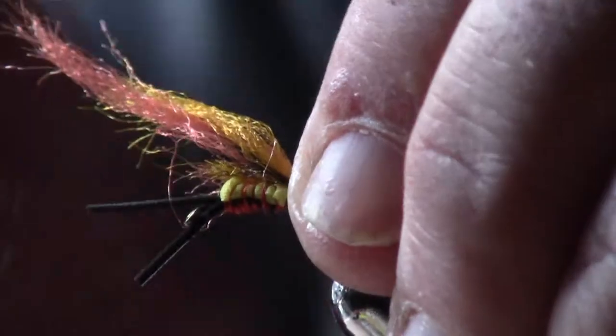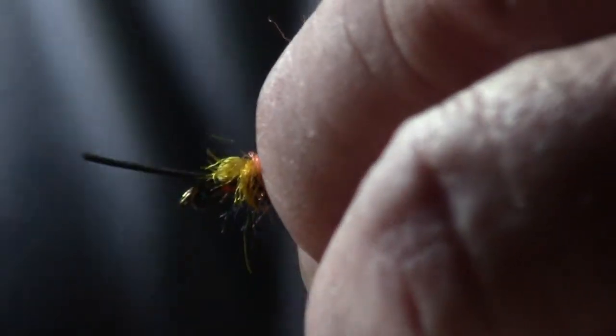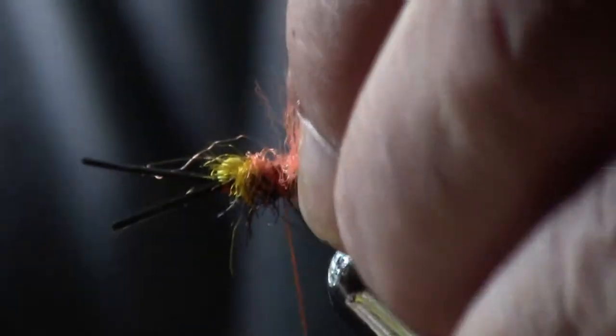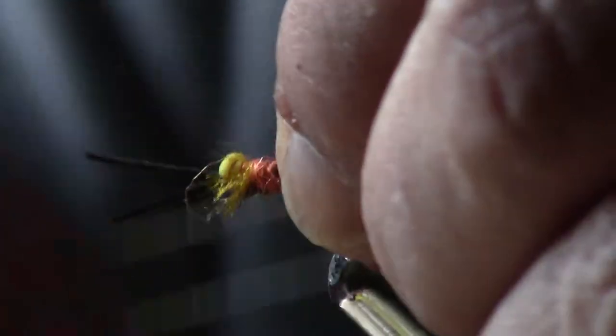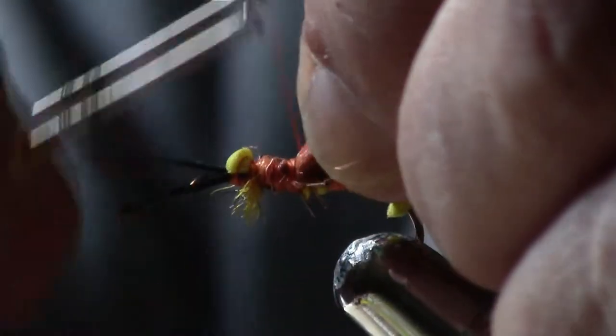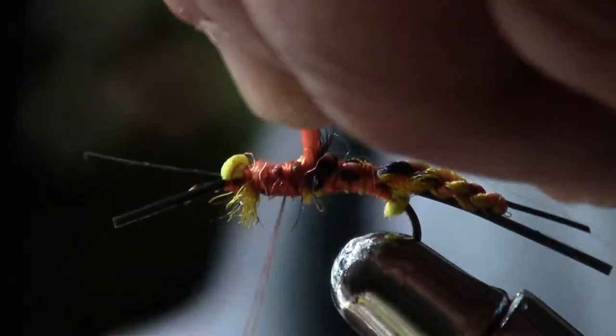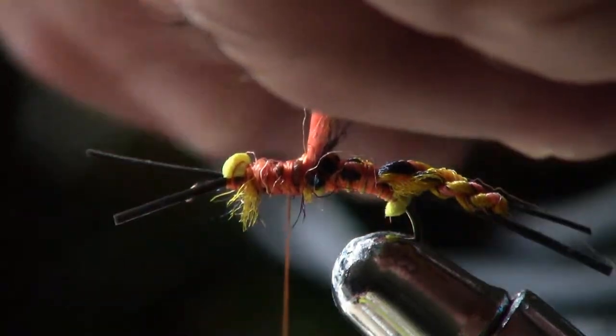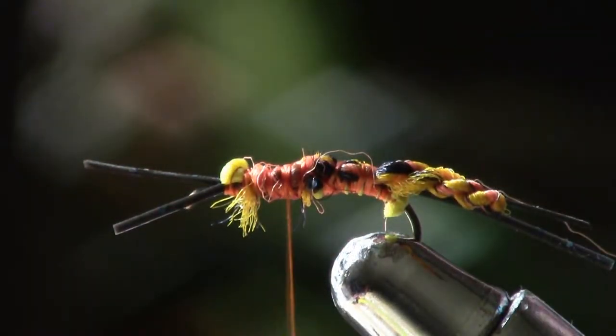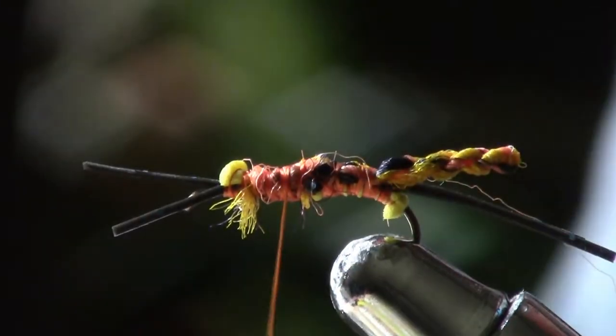Take the furrowed body made out of Antron yarn and wrap it on here. I like to give it a little wrap here at the end and tie it off. Cut the excess. I've got this furrowed body sticking out.